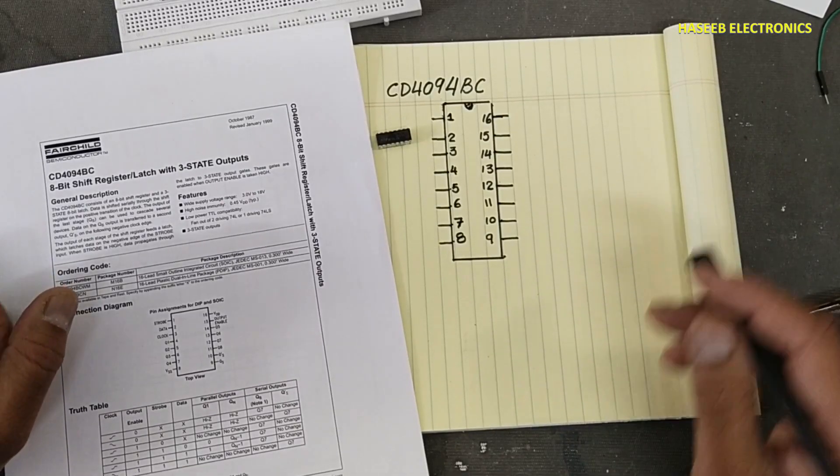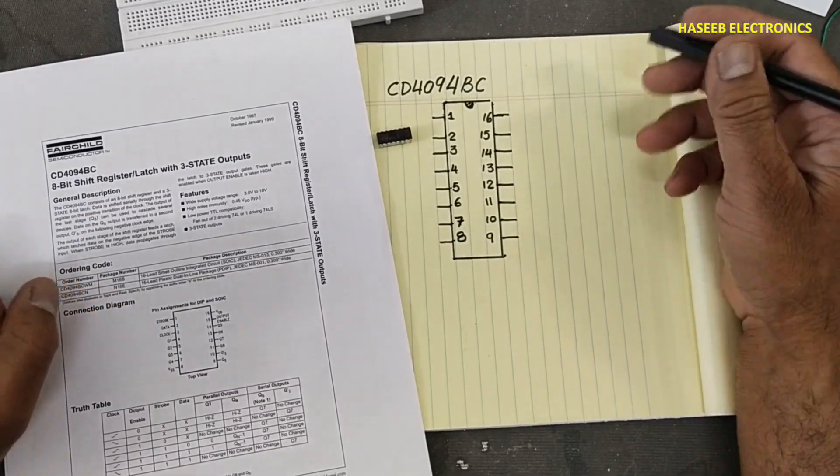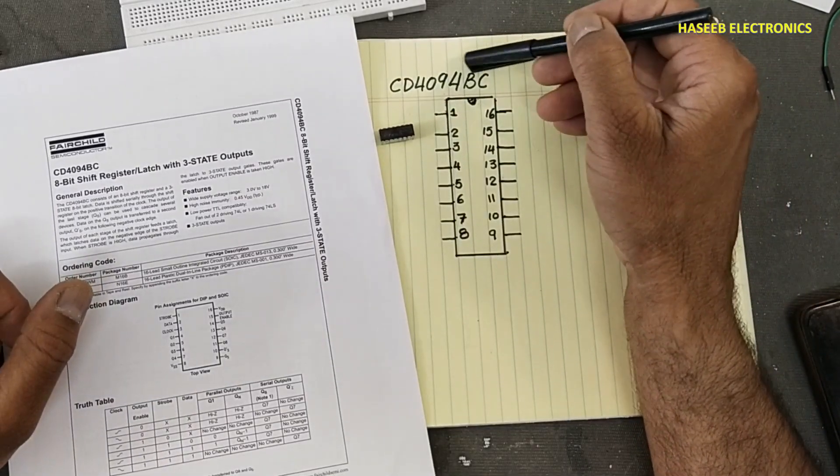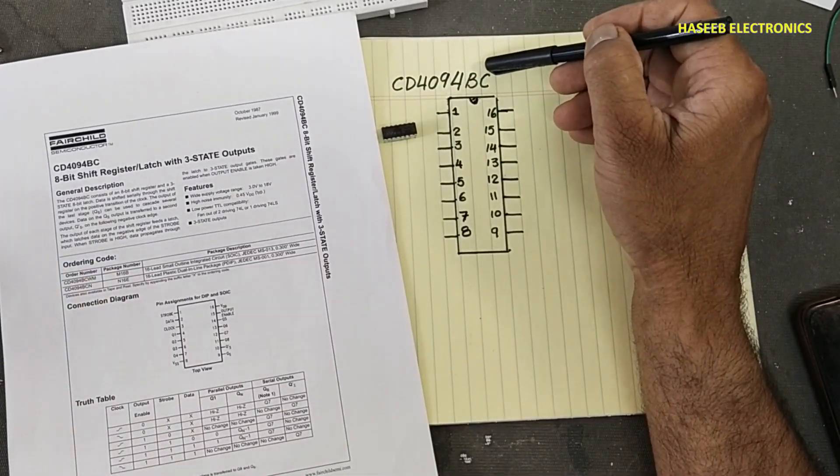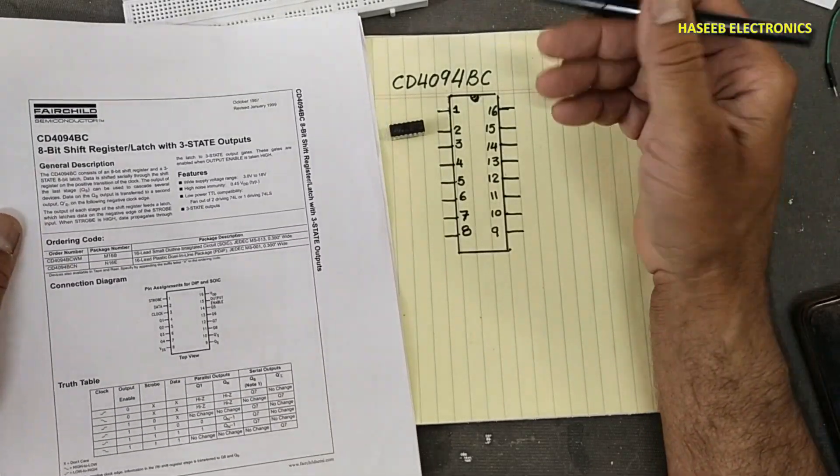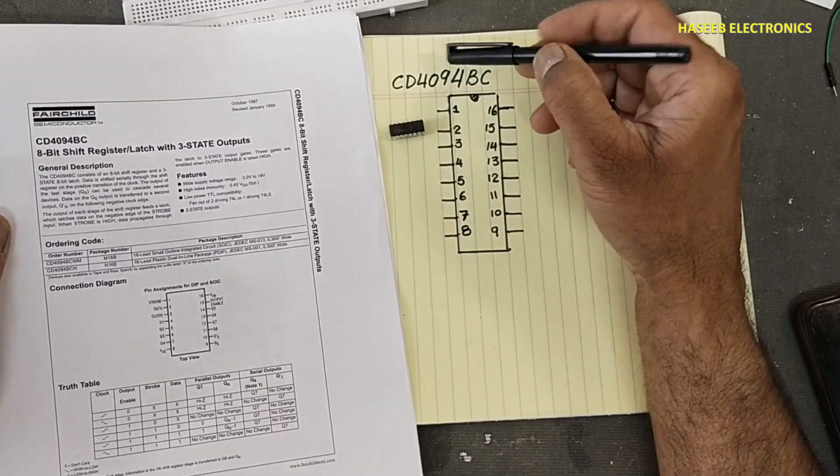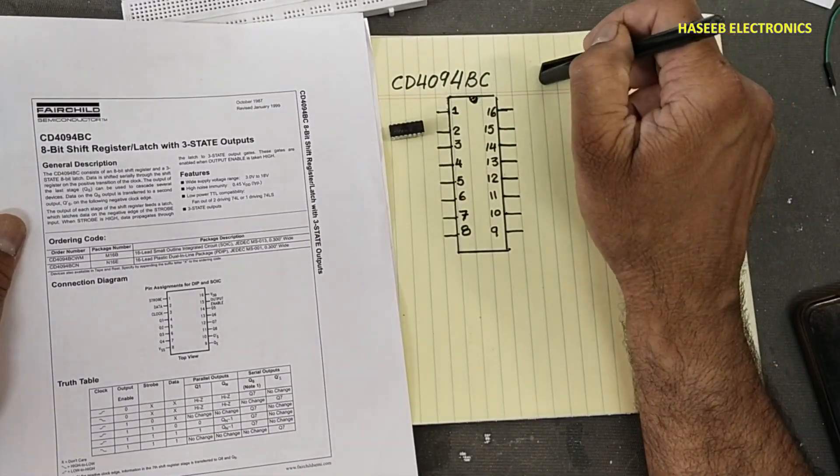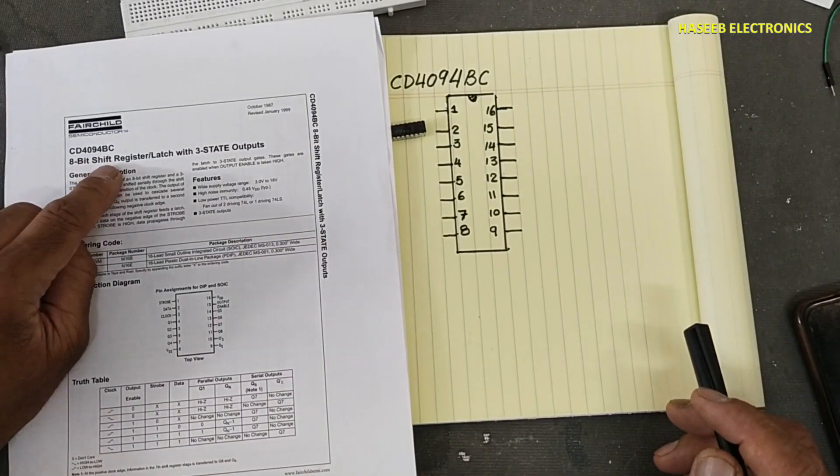Assalamu alaykum wa rahmatullahi wa barakatuhu friends, welcome back to my channel. In this session we are discussing CD4094BC IC. It is available in different numbers like HEF4094. The generic number is 4094. It is a CMOS IC, an 8-bit shift register.